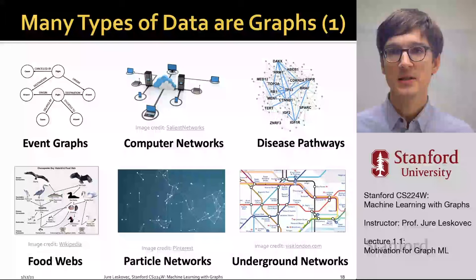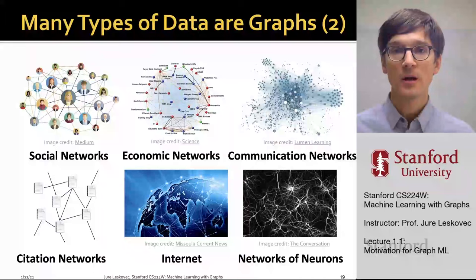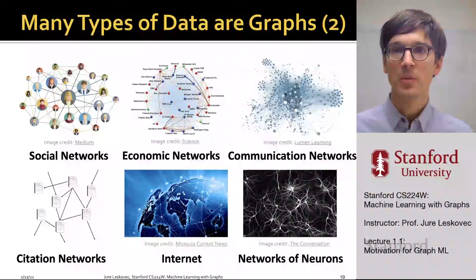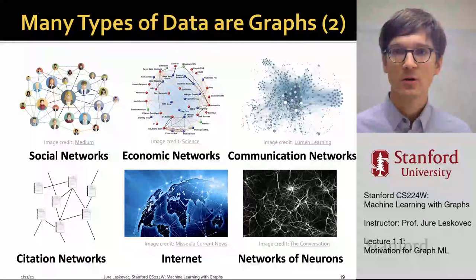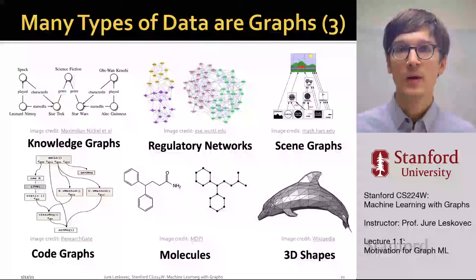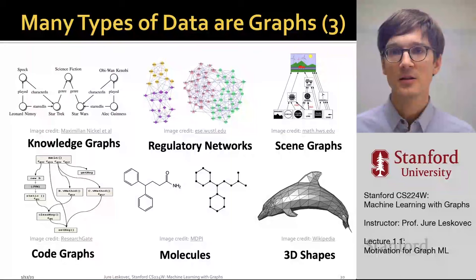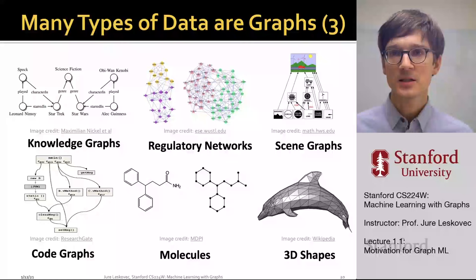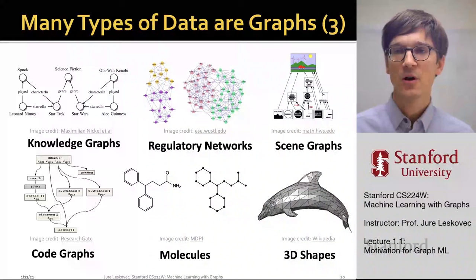Similarly, we can think of social networks, economic networks, communication networks, citations between different papers, the internet as a giant communication network, as well as ways how neurons in our brain are connected. All these domains are inherently networks or graphs, and that representation allows us to capture relationships between different objects or entities. We can also take knowledge and represent facts as relationships between different entities, and describe regulatory mechanisms in our cells as processes governed by connections between different entities. We can even take scenes from the real world and represent them as graphs of relationships between objects — these are called scene graphs.